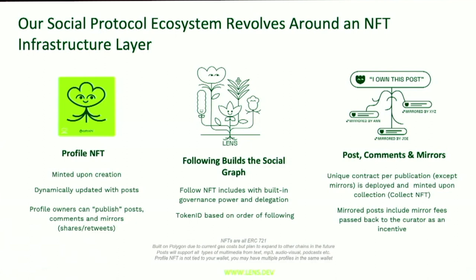If you've worked with ENS or Unstoppable, it may look very similar. The next thing it also has is following. There's some follow logic that when it succeeds will mint a follow NFT. So if David goes to follow Alan and passes this follow logic, David will receive an Alan follow NFT. Its token ID is based on the order of following — if I'm Alan's fifth follower, I will have token ID four, because we are developers and we start all counting at zero.